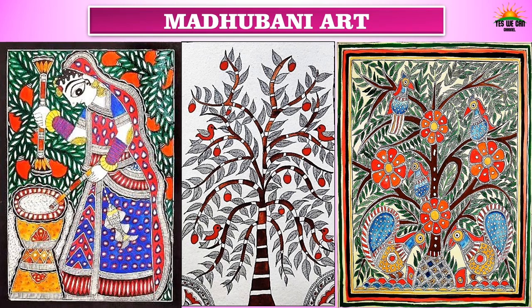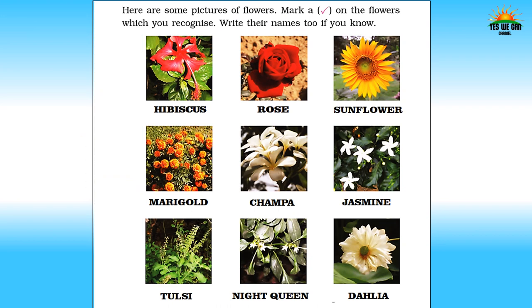Can you recognize and name these flowers? Yes, these are hibiscus, rose, sunflower, marigold, champa, jasmine, tulsi, nightqueen, and dahlia. Now let's see some flowers which grow on trees.